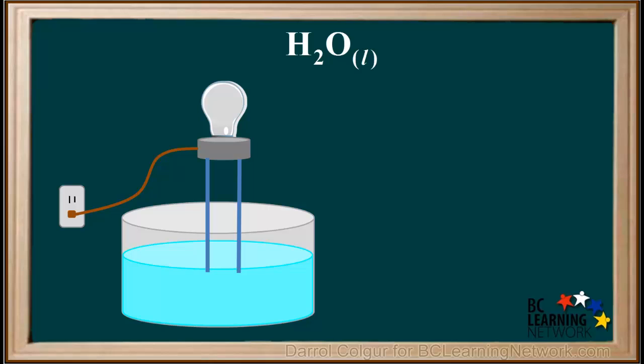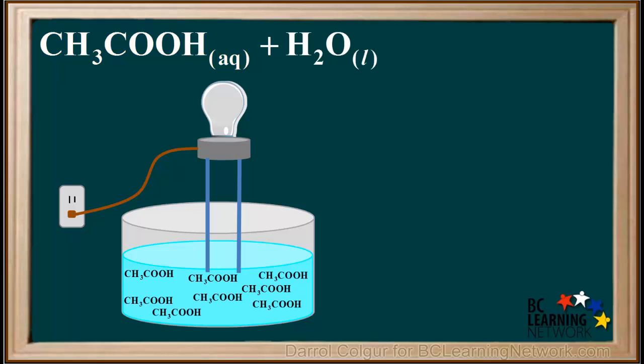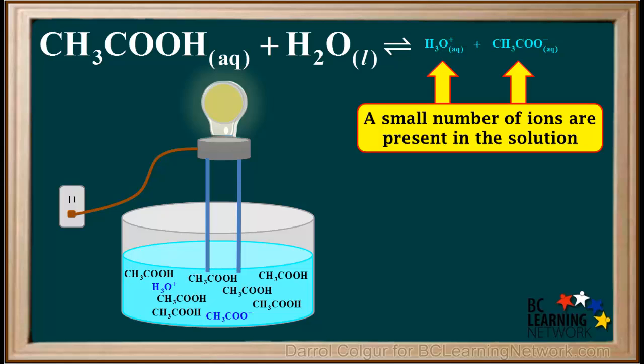If we insert a conductivity apparatus into pure water, it does not conduct enough to make the bulb glow. Now we'll add some acetic acid to the water. The acetic acid molecules spread out to fill the solution. A small number of the acetic acid molecules ionize and the bulb glows dimly. Because there's a small number of ions present in the solution of a weak acid, the conductivity is not zero, but it is low.